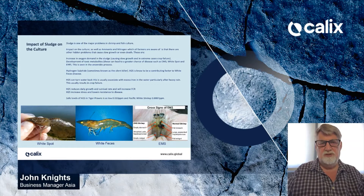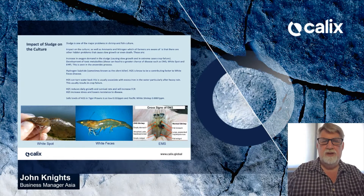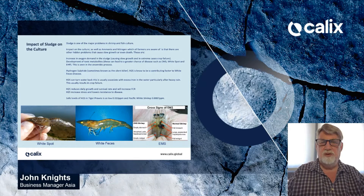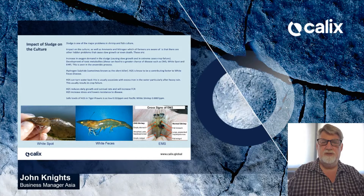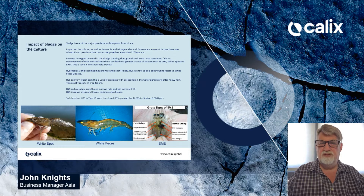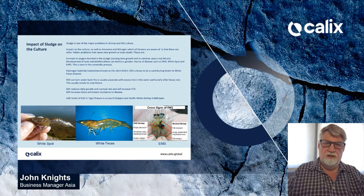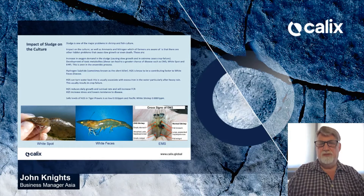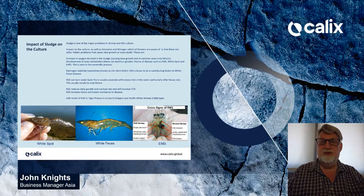Sludge is one of the major problems in shrimp and fish culture. Beyond the commonly known impacts of ammonia and nitrite, there are other hidden problems that can cause slow growth or even death. These include an increase in oxygen demand in the sludge causing slow growth and in extreme cases crop failure, as well as development of toxic metabolites. These can lead to a greater chance of disease such as EMS, white spot, and EHP.